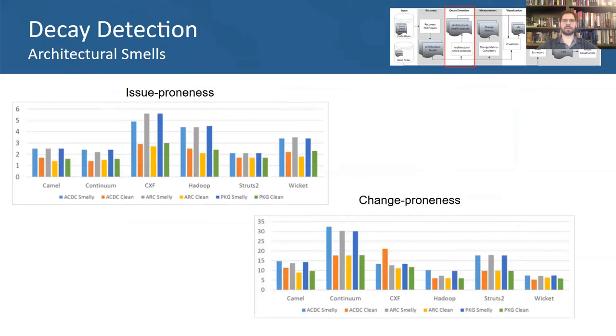Being able to detect manifestations of architectural decay is of great practical value. For example, previous empirical studies have shown that smelly files, that is, files involved in architectural smells, are significantly more prone to issues and to change over the evolution of that software system.